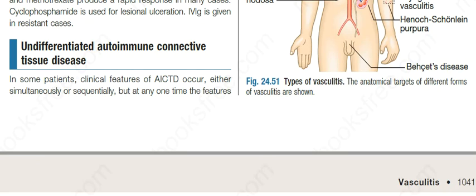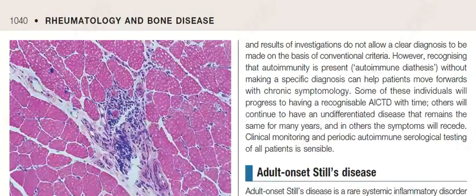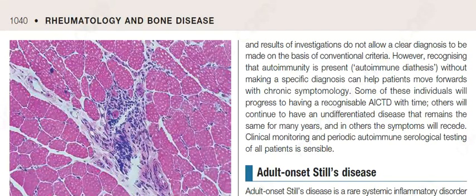In undifferentiated autoimmune connective tissue disease, clinical features of autoimmune connective tissue disease occur either simultaneously or sequentially, but at any one time the features and results of investigations do not allow a clear diagnosis to be made on the basis of conventional criteria.